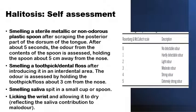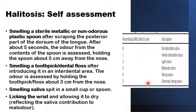Initially, the patient is asked to smell and score four of their own samples. These samples are obtained from scraping of the posterior part of the tongue, or a toothpick or dental floss of their own teeth, or smelling their own saliva spitted in a small cup or spoon, or smelling their wrist after licking it with saliva and allowing it to dry for a few seconds. After smelling all four samples, the patient scores the odor using a six-point index, where zero means no detectable odor, one is hardly detectable, two is light, three is moderate, four is strong, and five is extremely strong odor.